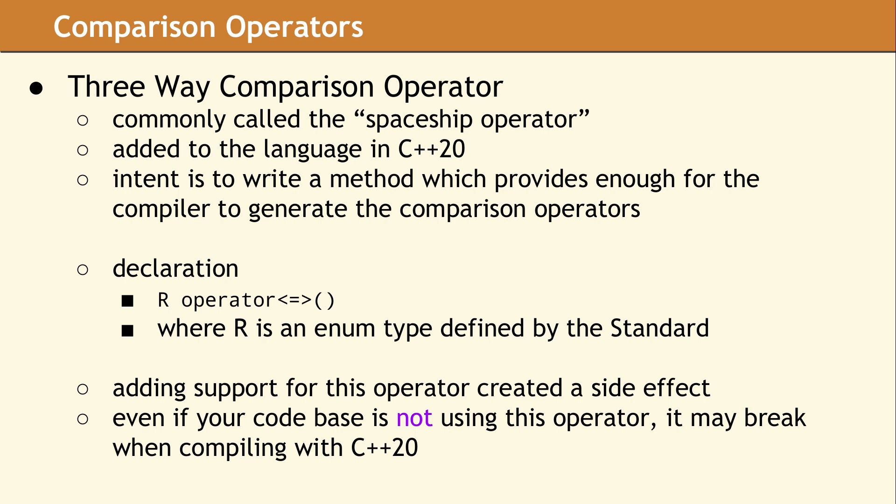When you declare a spaceship operator, the return type must match an enum type, which is defined in the standard. Your operator needs to return a single enum value to indicate whether a is less than, equal to, or greater than b. There are lots of rules in the standard about how to use a default implementation of a three-way comparison operator, when all six comparison operators are generated, and when the compiler will only generate the four relational operators. We will present more of this information in a future talk. For right now, let's take a look at an example which shows how the implementation of traditional comparison operators are affected by the three-way comparison operator.